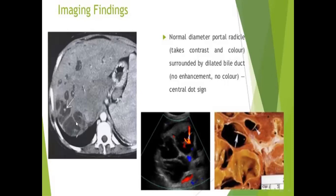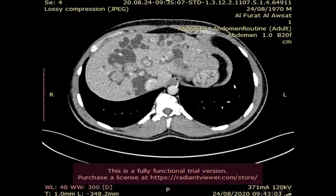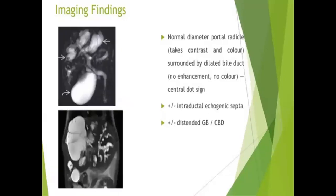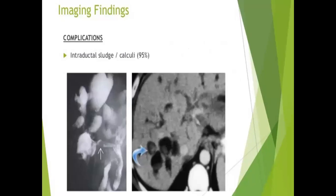The central dot sign: on CT you can see enhancement of the portal radical, and on ultrasound you can see color Doppler signal. In our case, the central dot sign is present, with dilated biliary tree, portal radicals, intraductal septae, and distended gallbladder and CBD. Regarding complications of Caroli disease, intraductal sludge or calculi occur in 95% of cases.